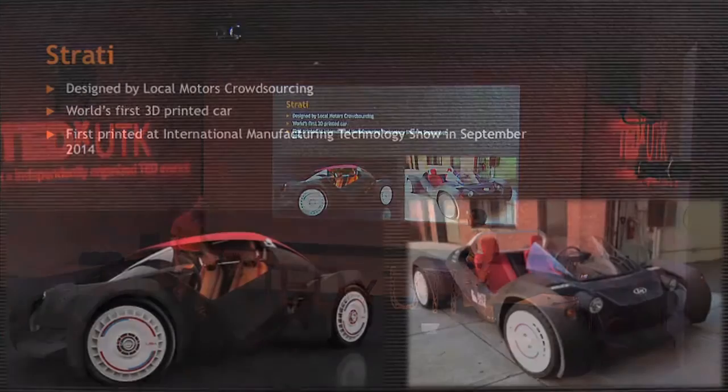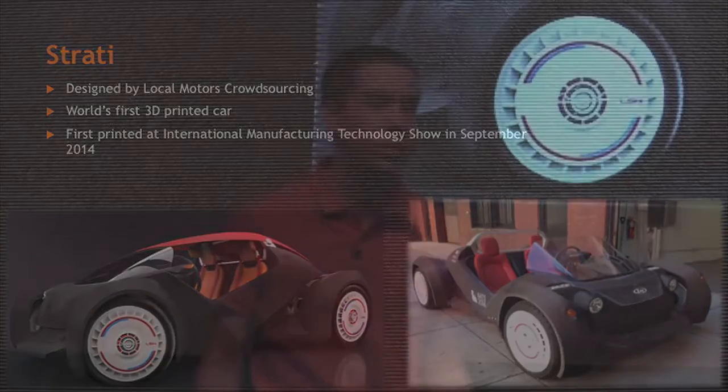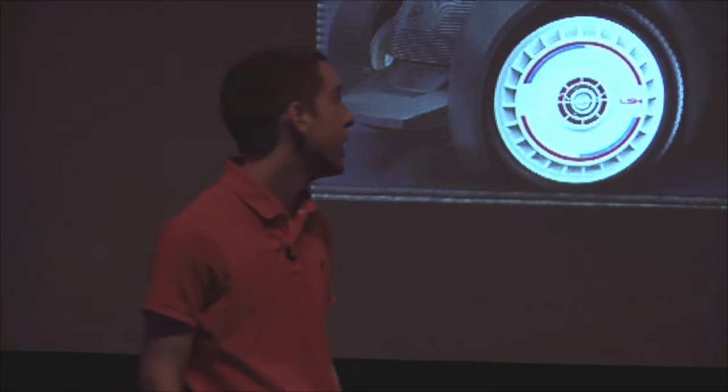This is Strati. On the left, we have the computer-generated model, and on the right is the actual thing. Just six months after we announced the 3D printing project, we made the world's first 3D printed car. Strati was the winning design in the Local Motors Crowdsourcing Design Competition. In just 44 hours, we were able to print the main body of the car in a solid piece in front of over 100,000 people at the International Manufacturing Technology Show in Chicago.